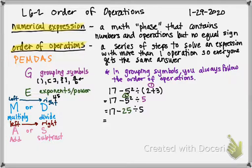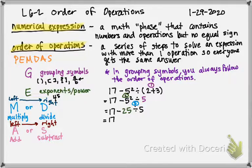Next, do we have any exponents? Yes. So we do the exponent next: 17 stays, minus stays, and 5 squared is 25. Then divided by stays, and the 5 stays. Now, do I have any multiplication or division? Yes, I do — so I do the division. 17 stays, subtraction stays, and 25 divided by 5 is 5.